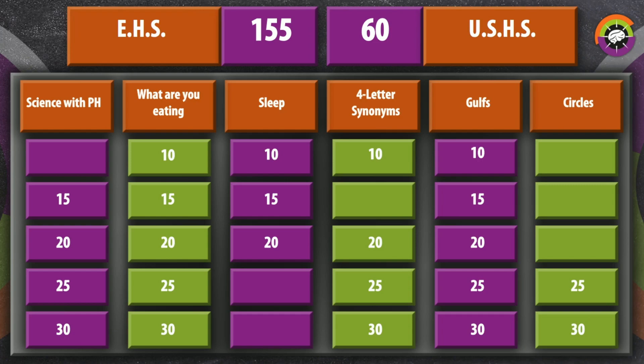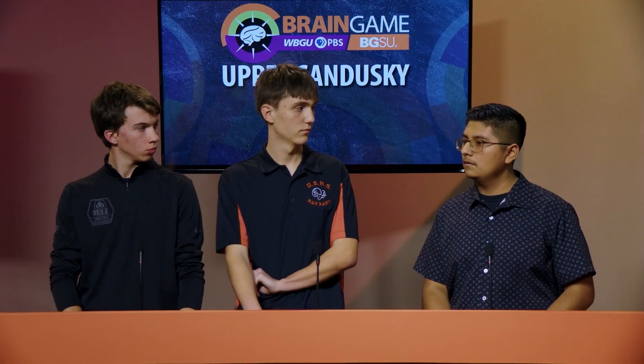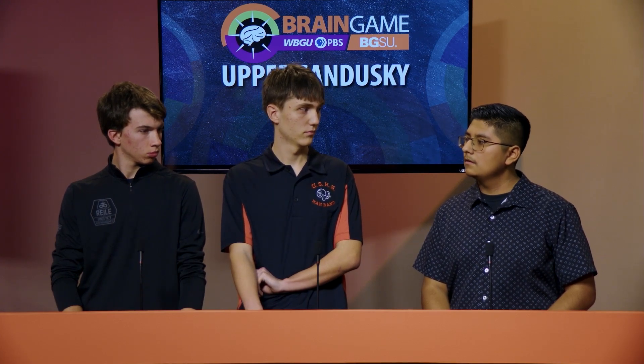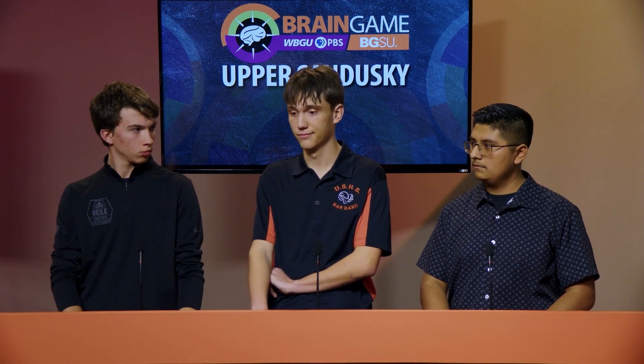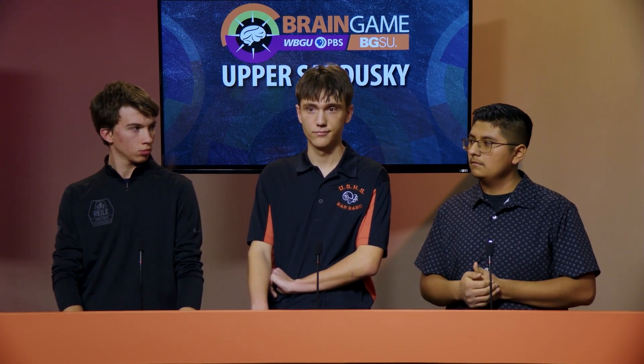Upper Sandusky selects Gulfs for 15 points. Based on the given description, identify each gulf. North American Western Gulf. Evergreen buzzes in — Ethan answers 'Gulf of Mexico' — incorrect; also known as the Sea of Cortez. Upper Sandusky gets the chance to steal — Daniel answers 'Gulf of Tonkin' — incorrect. The Gulf of California is what we needed there.